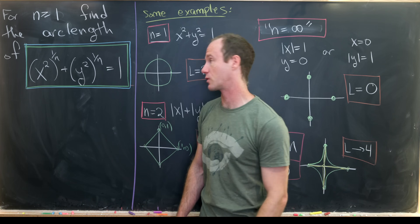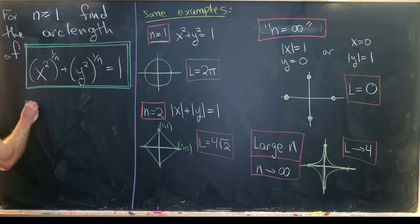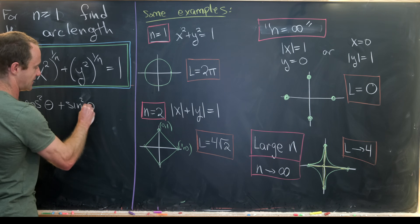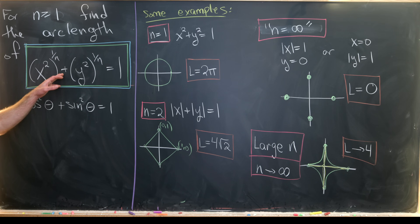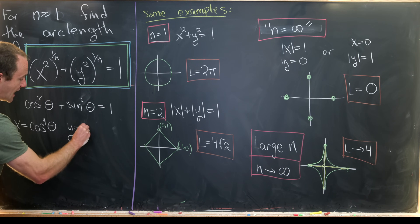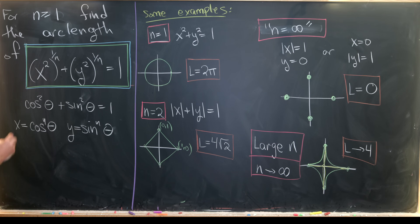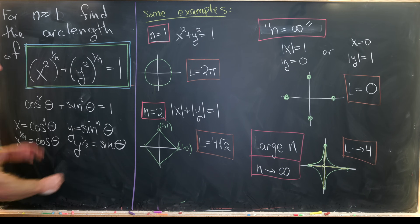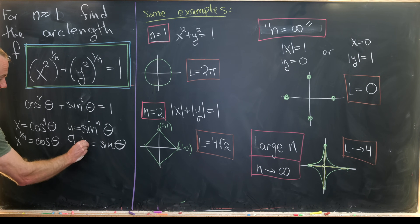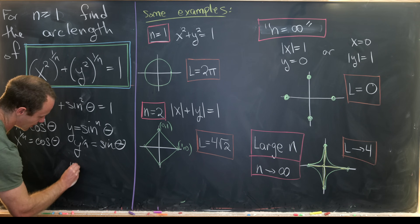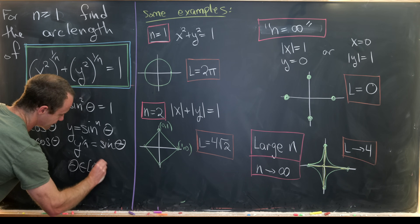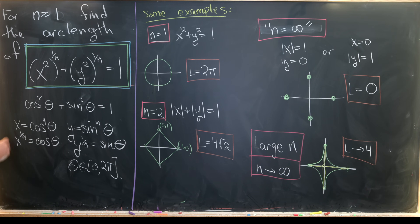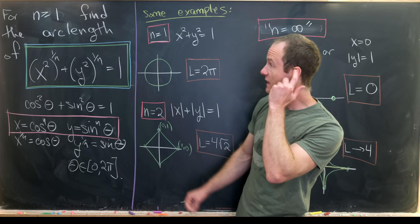Now let's look at how we might calculate this. I think our best approach is to parametrize the curve using the identity cos²θ + sin²θ = 1, and build that out to our current equation. We can do that by setting x = cos^n(θ) and y = sin^n(θ). That makes x^(1/n) = cosθ and y^(1/n) = sinθ, so our equation is satisfied once we raise each to the second power. To draw the whole curve, θ ranges from 0 to 2π.